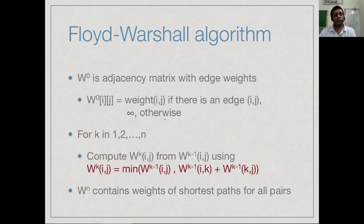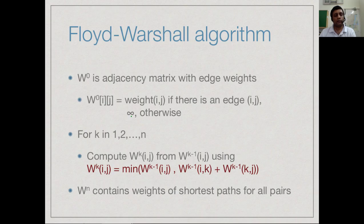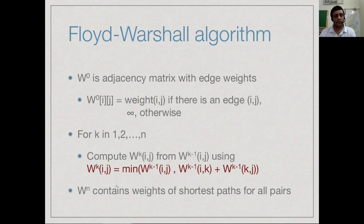This gives us an immediate algorithm called the Floyd-Warshall algorithm. We start with a matrix W^0 whose entries are exactly the edge weights — if there is an edge from i to j, W^0(i,j) is that weight; if there is no edge, W^0(i,j) is infinity. Then for k from 1 to n we repeat the update, computing W^k from W^(k-1) using the recurrence. After n iterations, W^n has the shortest paths with no constraints, capturing any arbitrary combination of intermediate vertices.